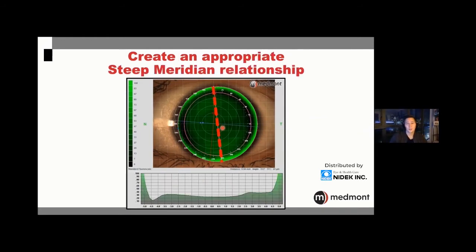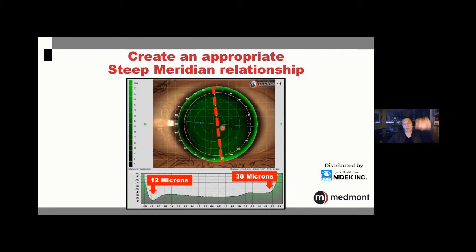Once you've got apical clearance at the appropriate level, the lens lands in the mid periphery and becomes laterally stable. Along the flat meridian, we want the lens to touch down at 3 o'clock and 9 o'clock so the contact lens is laterally stable — sitting on those two points and resistant to moving nasally or temporally. Now we assess the steep meridian: clicking the cursor at the optic zone junction, we have 12 microns up top and 38 microns below — averaging about 50 microns of fluid in that meridian.